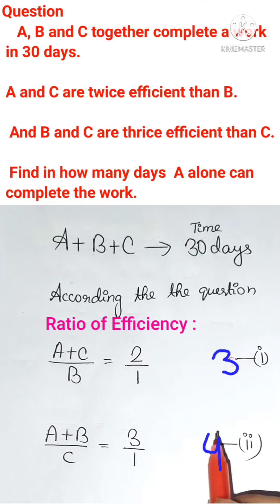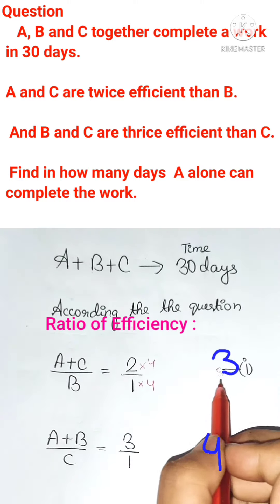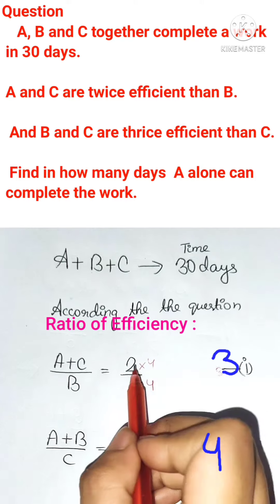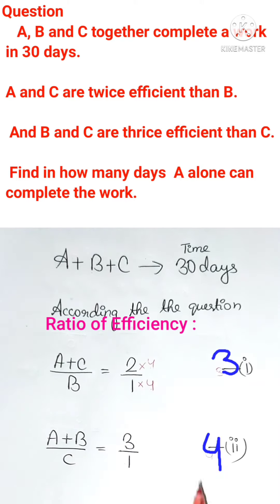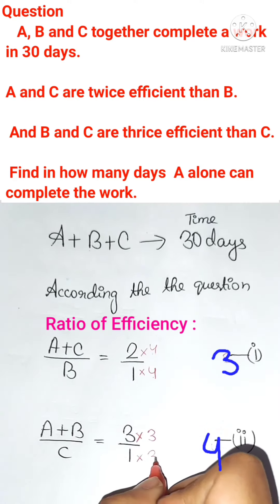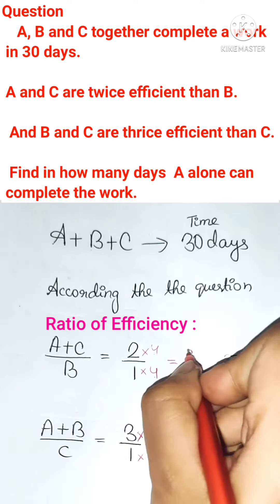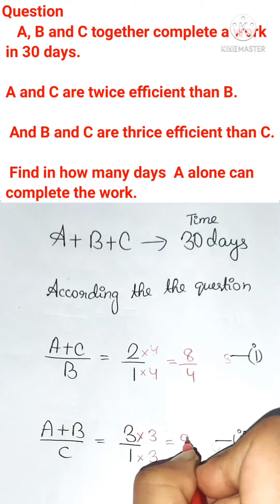The LCM of 3 and 4 is 12. So we need to make 3 twelve. So for making this 3 twelve we need to multiply it with 4. So we will multiply the numerator with 4 and the denominator with 4 as well. Similarly for making 4 twelve we need to multiply it with 3. And here also we are going to multiply it with 3. So here ultimately we will get 8 by 4 and here we will get 9 by 3.